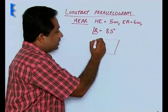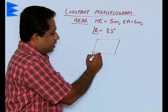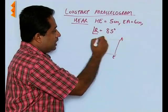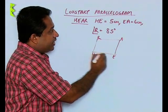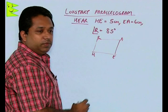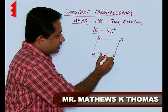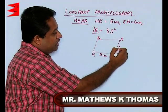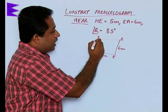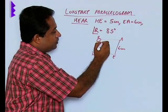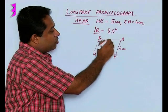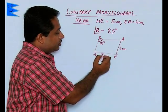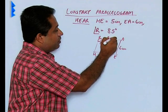Let us consider that this is the parallelogram HEAR. The length of HE is given as 5 centimeters, so we write this as 5. EA is 6 centimeters. Angle R is 85 degrees. Now since it is a parallelogram, opposite sides are equal, so this is 5, this will be 5. This is 6, this is going to be 6.